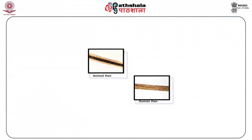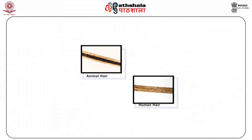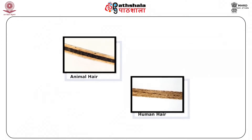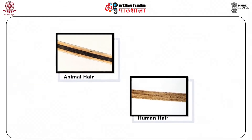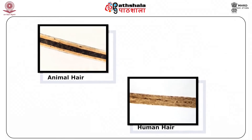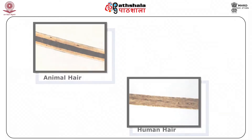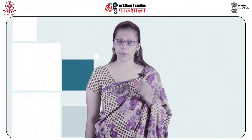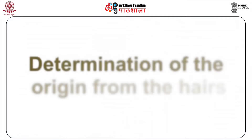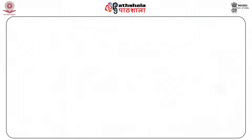Next comes the medulla. The medulla begins more or less near the root. In many animals, the medulla is very broad, occupying two-thirds or more of the shaft diameter. In man, it is narrow, occupying only about one-third of the width. The medulla may be classified into two types: continuous or fragmented.